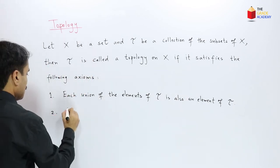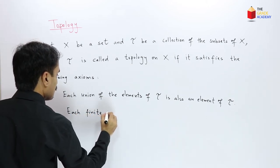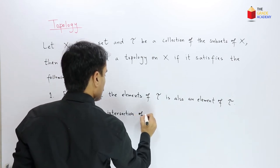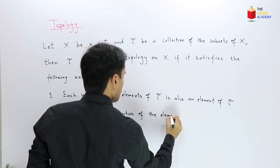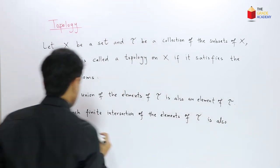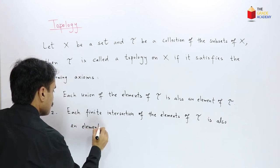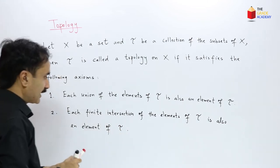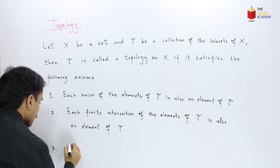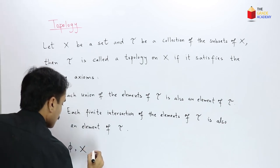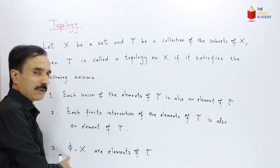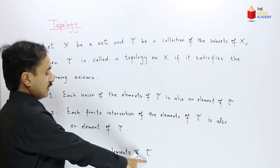The second condition is: every finite intersection of the elements of tau is also an element of tau. So if we take the intersection of the elements of tau, then that intersection also belongs to tau. And the third axiom is: the empty set phi and the set X are elements of tau.